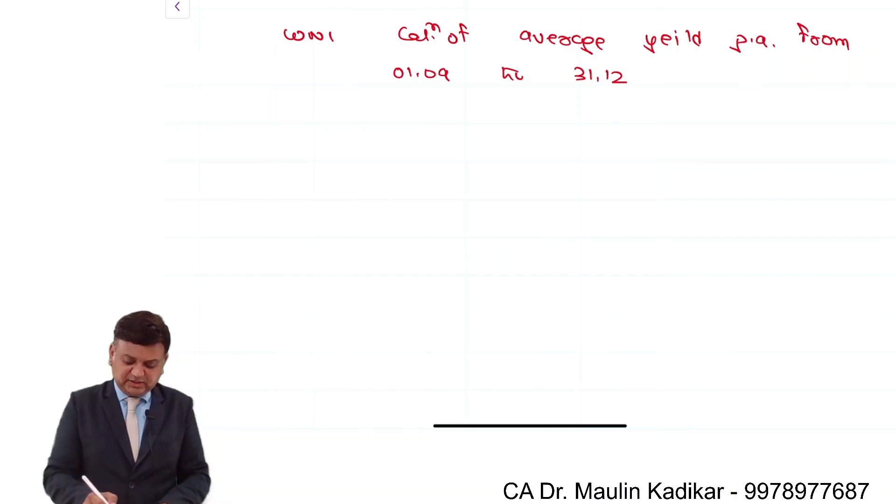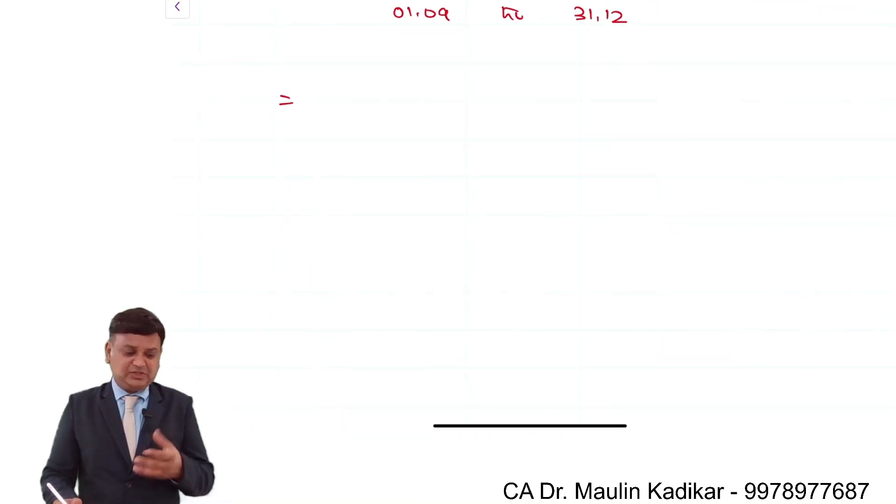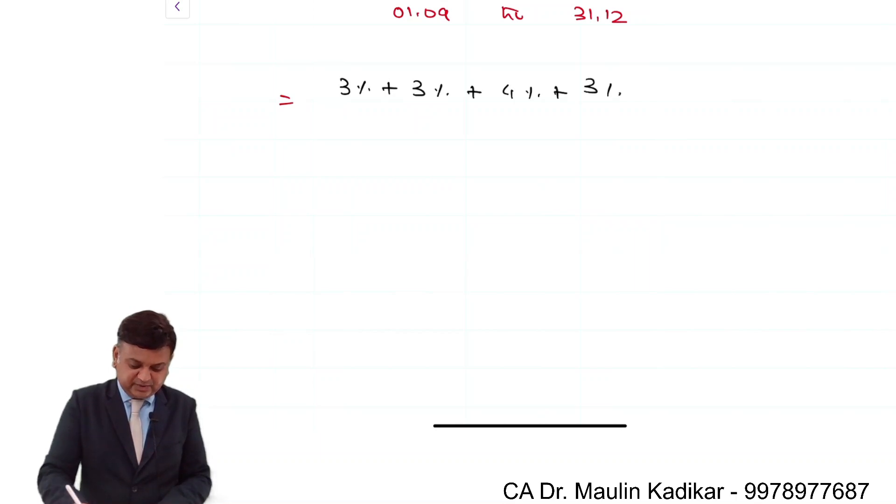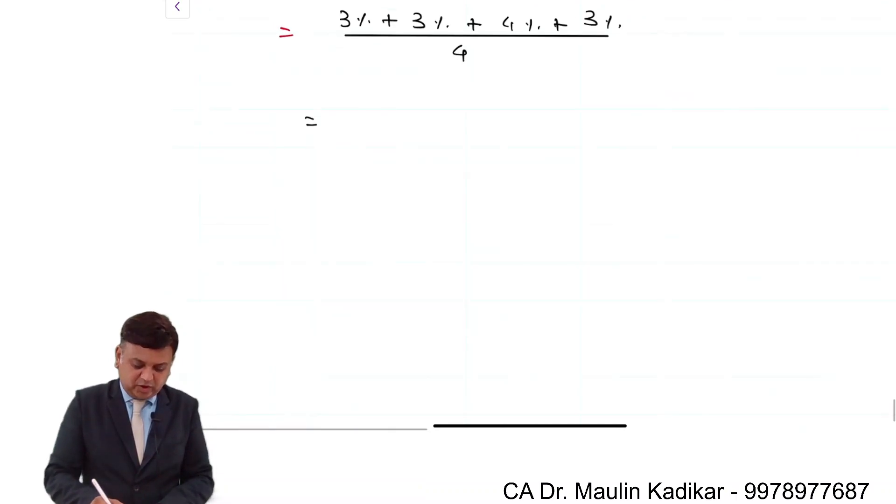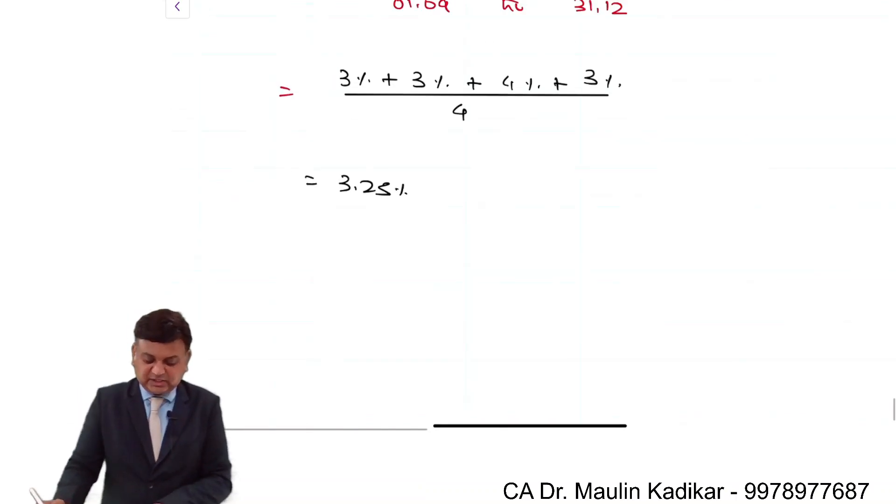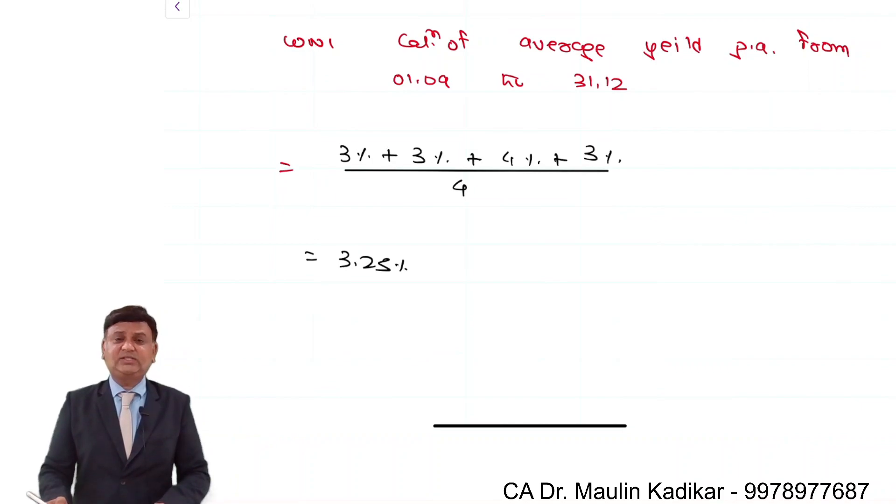For these three to four months, whatever dividend information is given to us, we are required to make an average. For September it is 3%, for October it is 3%, for November it is 4%, and for December it is 3%. Adding these: 9 plus 4 equals 13, divided by 4, so on average it is 3.25%. This is the dividend yield.